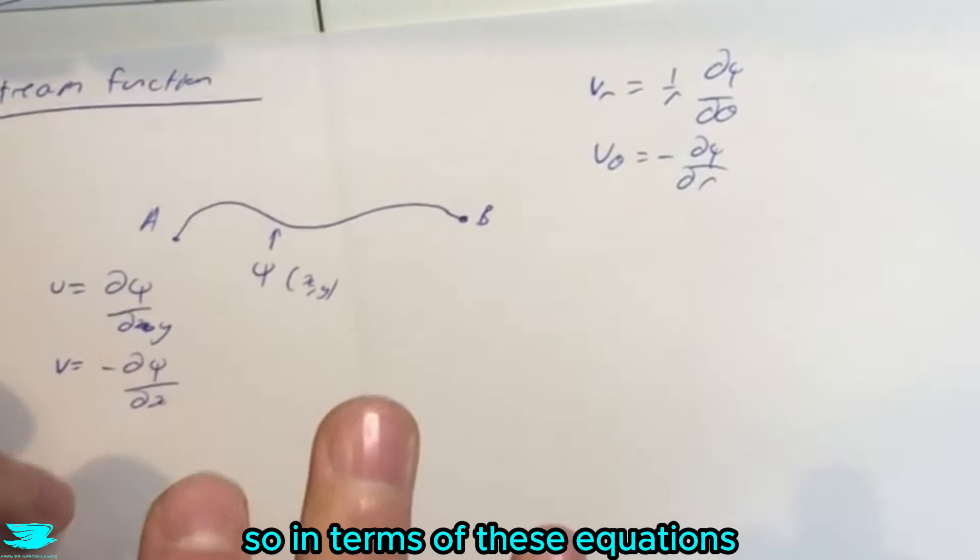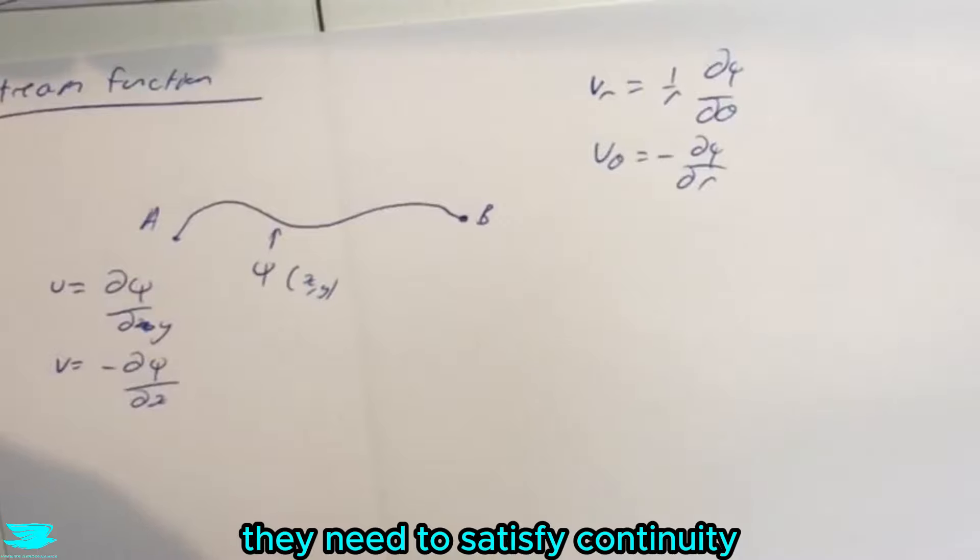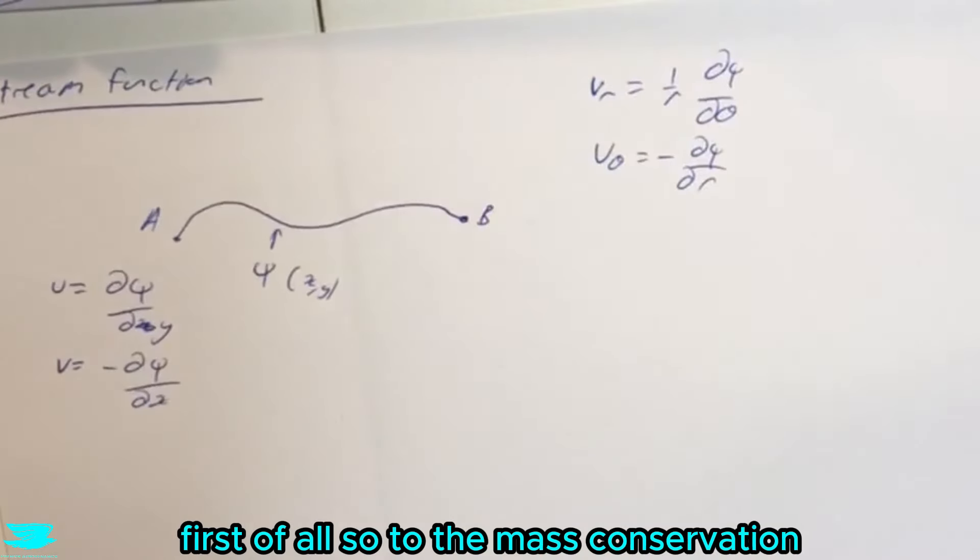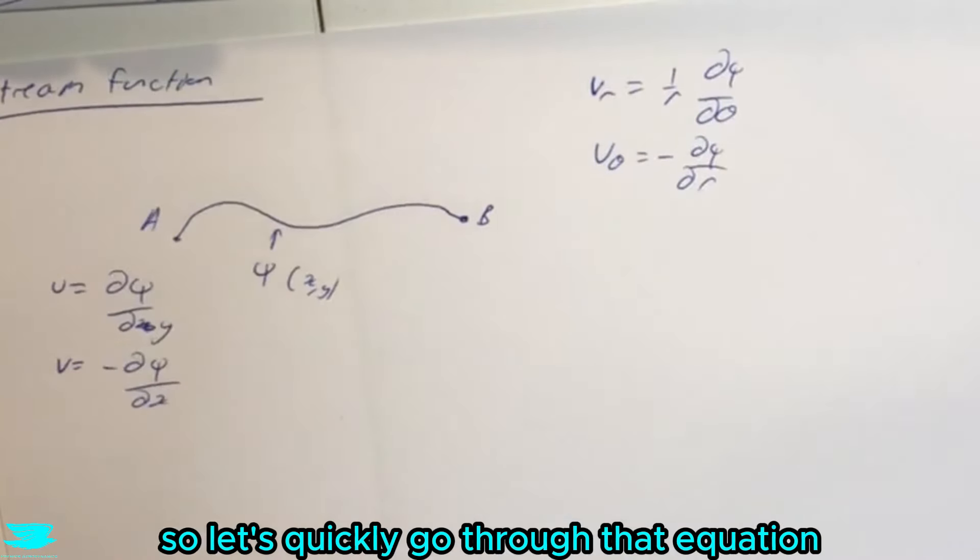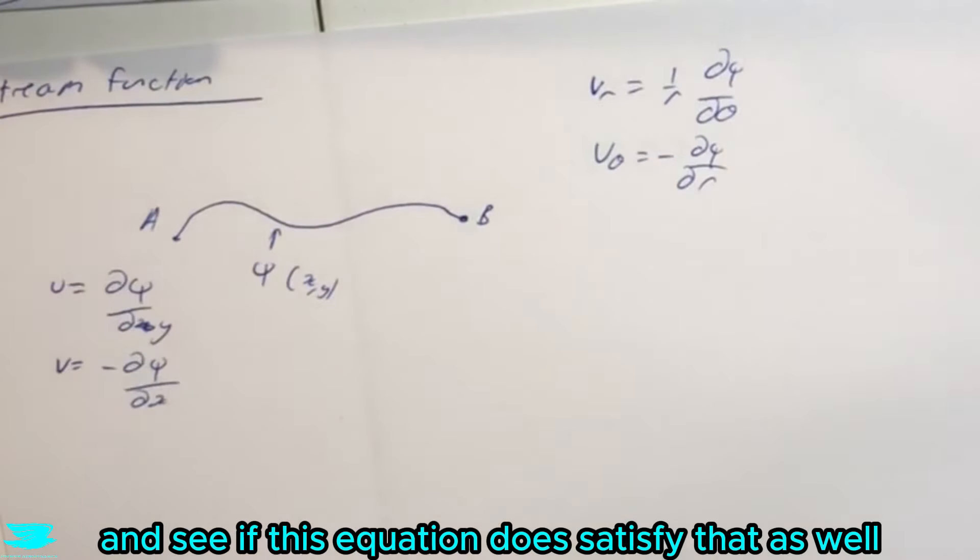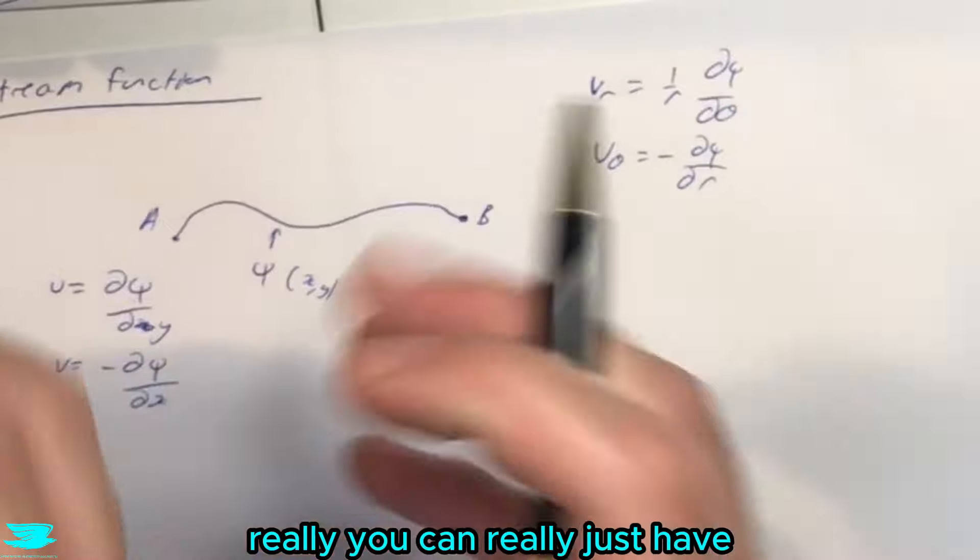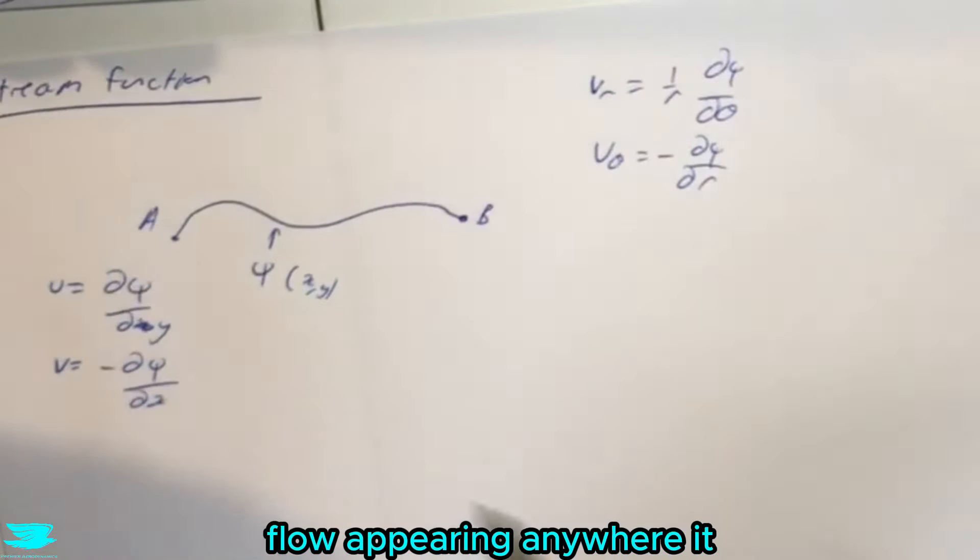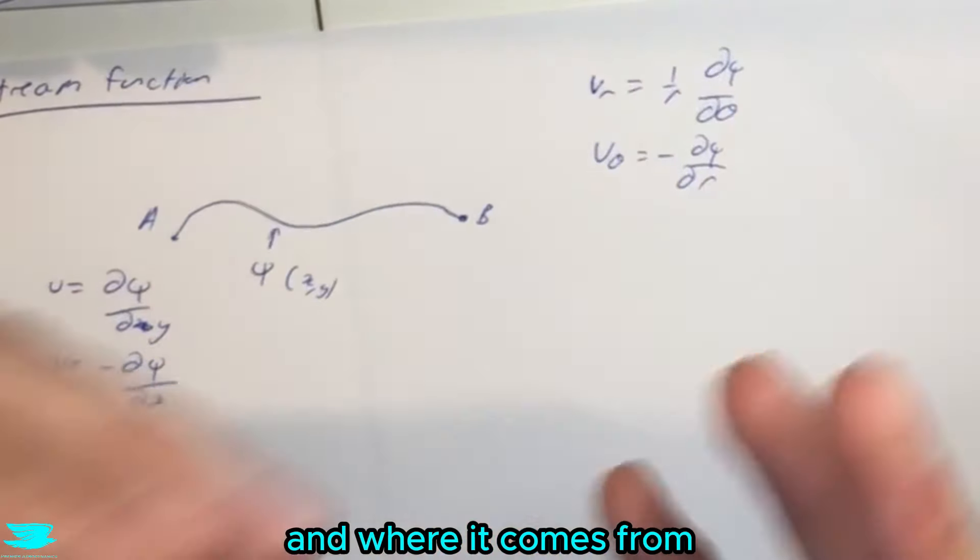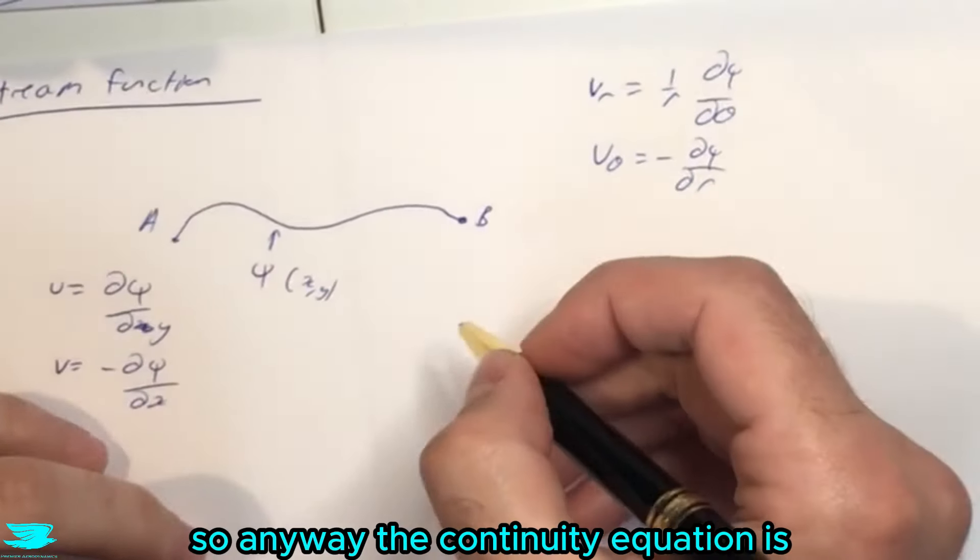So in terms of these equations, they need to satisfy continuity first of all, so the mass conservation. Let's quickly go through that equation and see if this equation does satisfy that as well because that is important for any flow. You can't really just have flow appearing anywhere, it has to come from somewhere and where it comes from, there obviously has to be a reduction there.